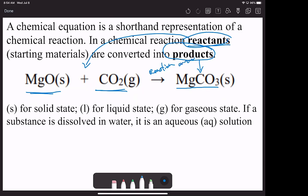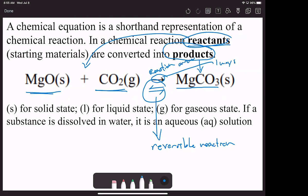You may also see a reaction arrow that points both ways — that means it is a reversible reaction. If you have a one-way arrow, consider that a one-way street: the reactants only make the products. But in a reversible reaction, reactants can make products and products can revert back into reactants.